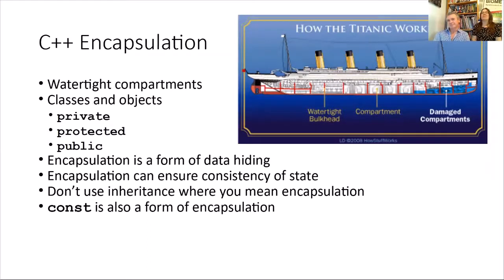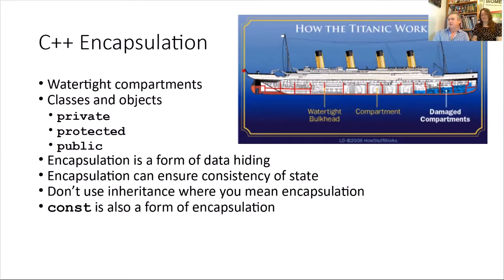C++ encapsulation provides watertight compartments via classes and objects with private, protected, and public access. Encapsulation is a form of data hiding that ensures consistency of state. Don't use inheritance where you mean encapsulation. Const is also a form of encapsulation. Like compartments on the Titanic — they certainly help and keep you afloat longer, even if they're not foolproof.